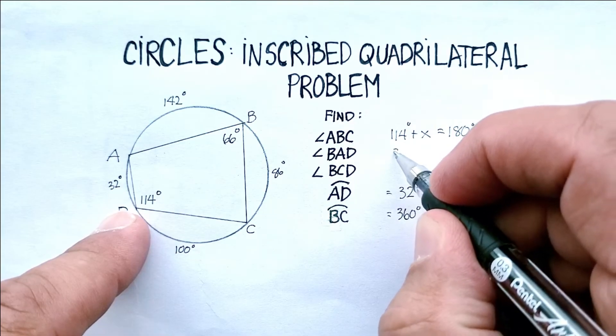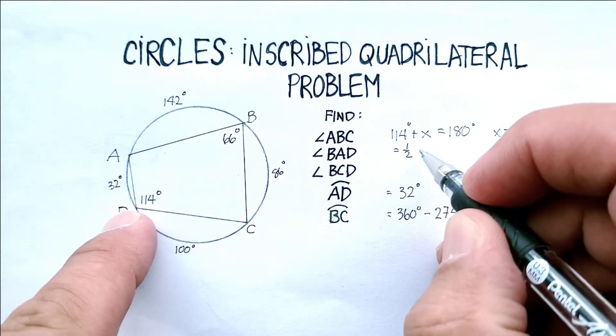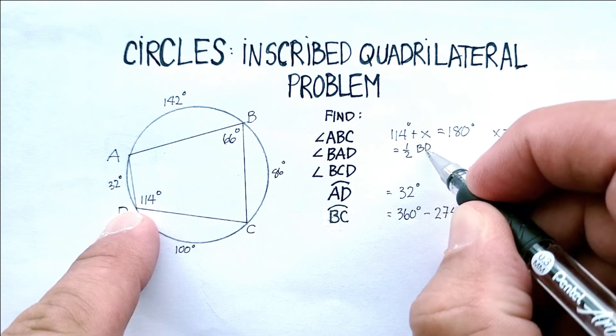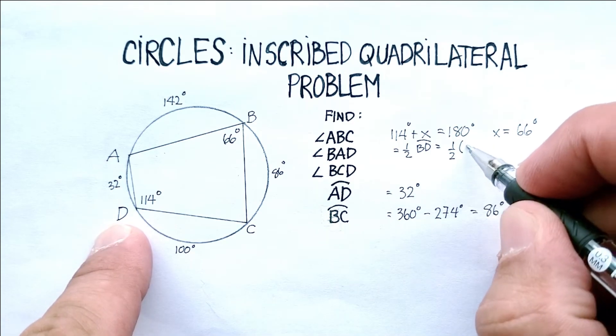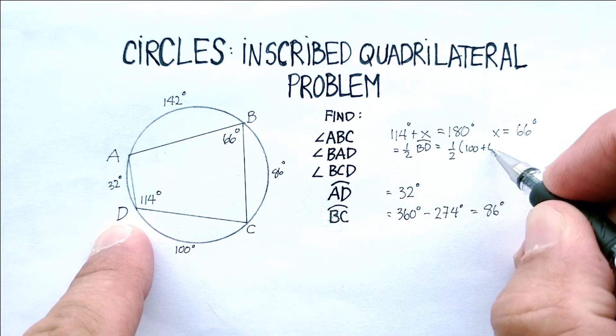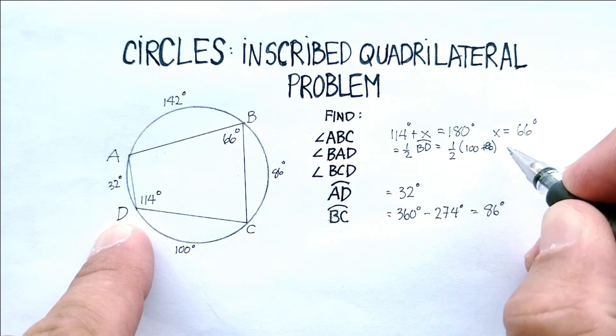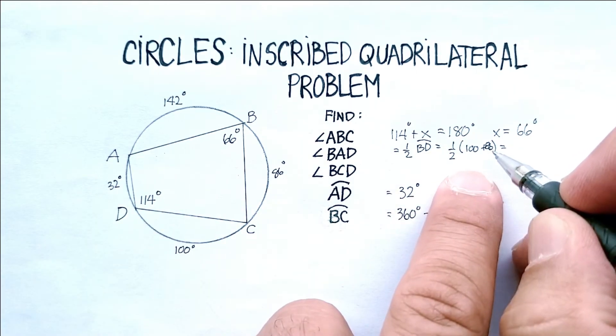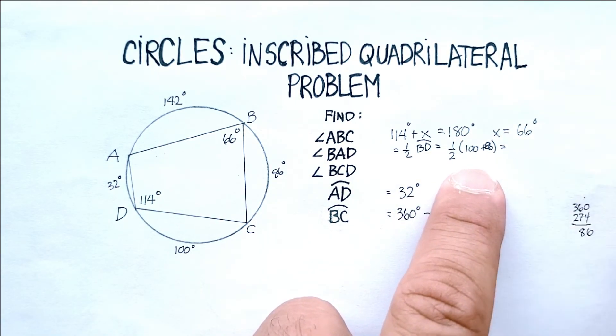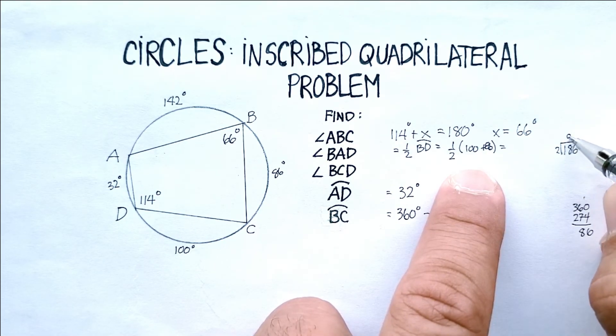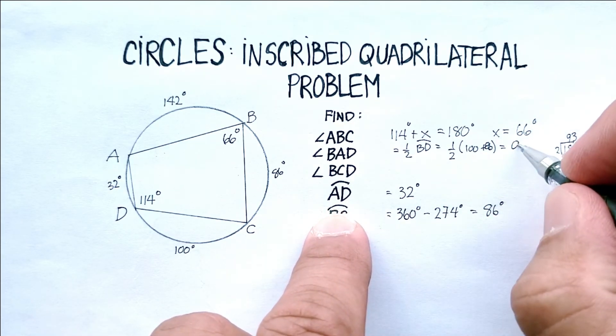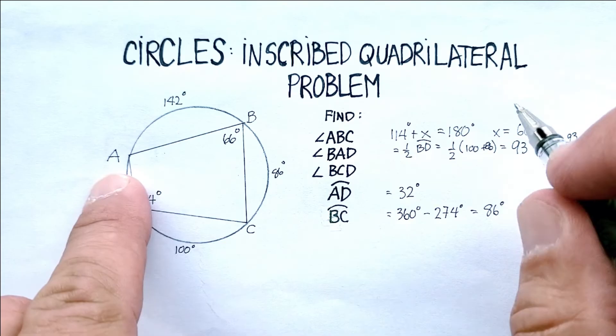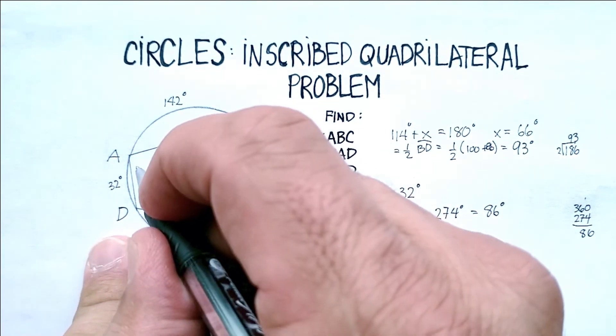So BAD will be equal to one half of arc BD, which is one half of 100 plus 86, which turns out to be 186, so that should be half of 186 is equal to 93 degrees. So now we have angle BAD at 93 degrees.